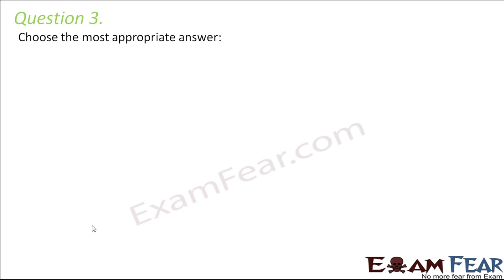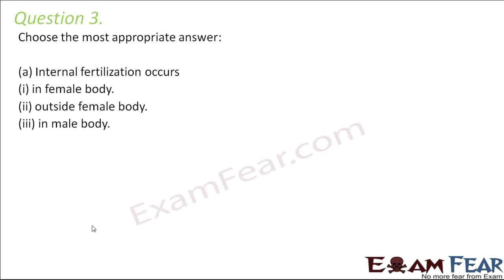Question number 3: Choose the most appropriate answer. Internal fertilization occurs in — female body, outside female body, in male body, or outside male body. Internal means it occurs inside. Fertilization always occurs inside the female body because the female gamete is not motile — the ovum cannot move, but the sperm can. So the sperm enters inside the female body and moves to where the ovum is. Therefore, fertilization takes place inside the female body.